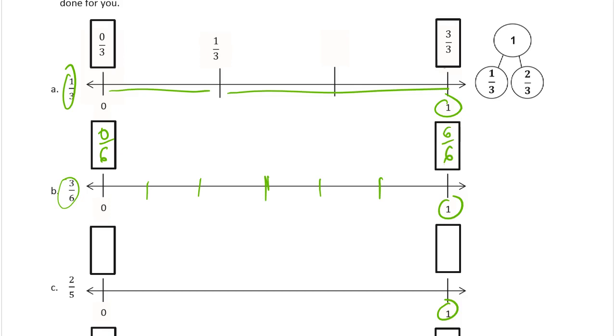In the middle, that's 1/6, 2 sixths. This is going to be 3 sixths right here. So my number bond is going to be 1 for the whole because that's the end of our number line. And then it takes 1, 2, 3 more sixths to get the rest of the way. So it's 3 sixths and 3 sixths.